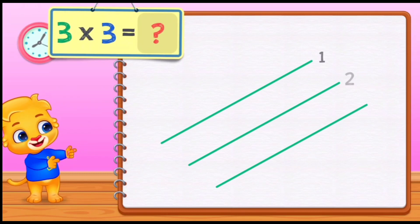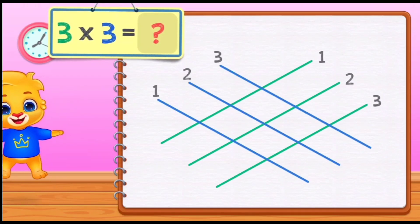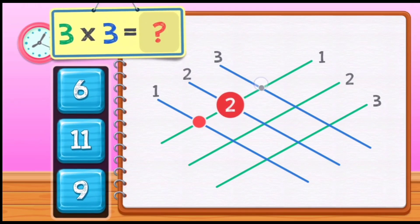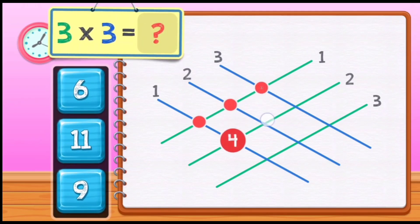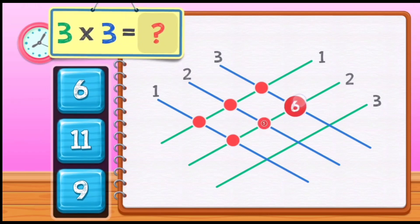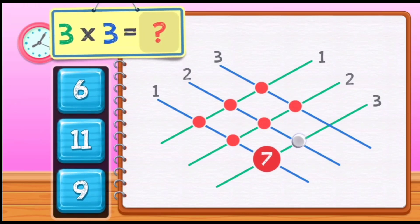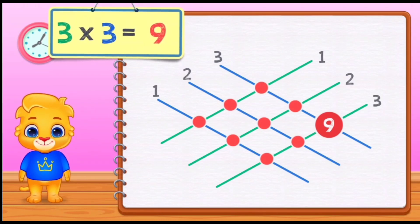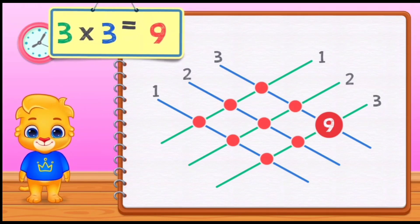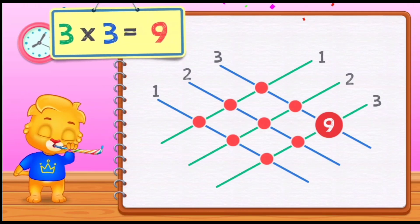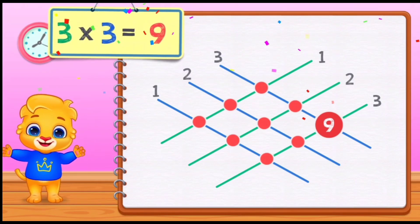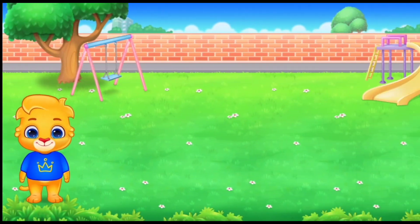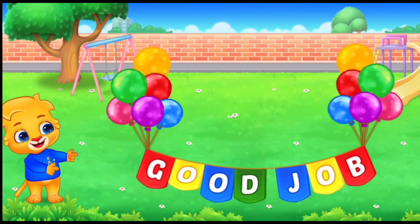Three times three equals: one, two, three, four, five, six, seven, eight, nine. 3 times 3 equals 9. Good job!